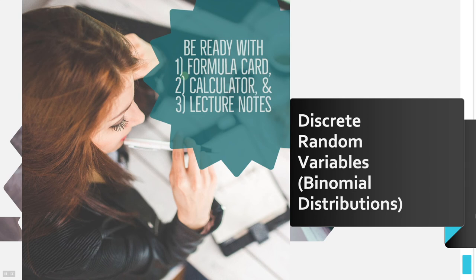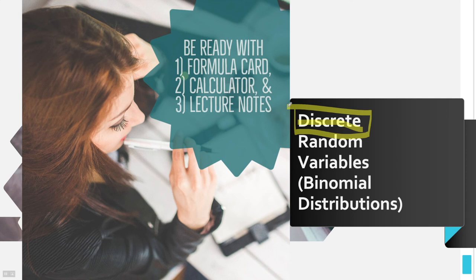You'll recall from the very beginning of the course that we have discrete and continuous as two types of quantitative or numerical variables. The discrete variable was the variable that we used when we had a whole number value. Continuous was used for measurements — you could have values like 22.2, 22.25, 22.257 — that kind of thing that can keep going forever, but discrete is a whole number value.